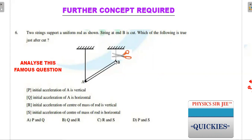To understand the concept, let's look at this problem. Once the string is cut, we first try to understand the directions of acceleration of point A and the center of mass. Once you know the direction of accelerations, you know the direction of velocities just after the cut — or dt seconds after the cut — which allows us to easily locate the position of the ICR.